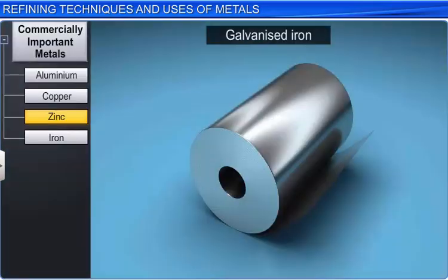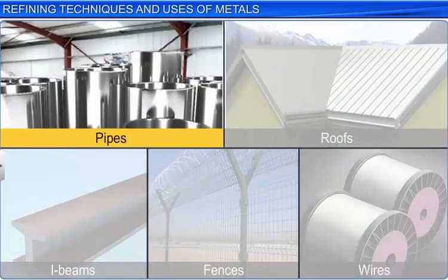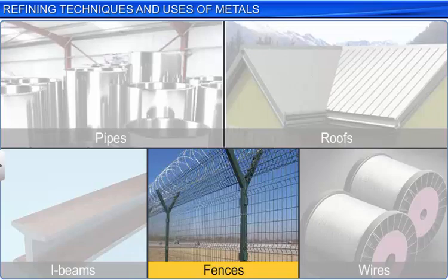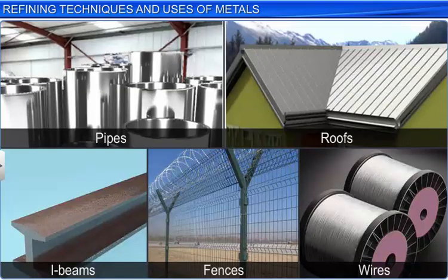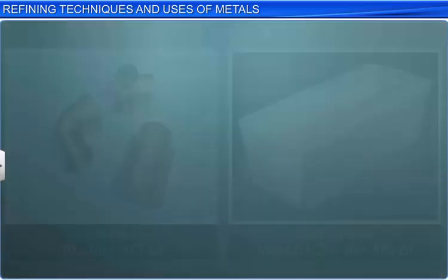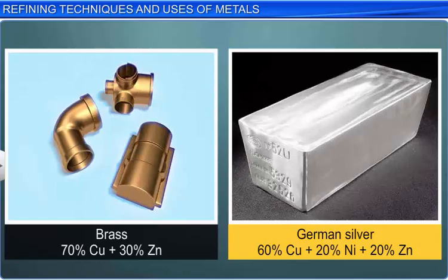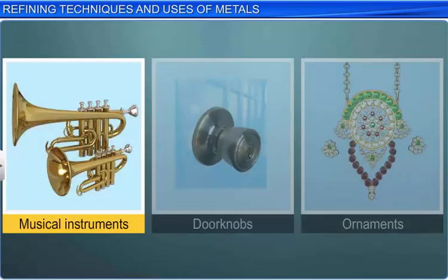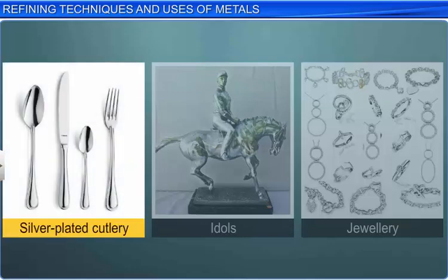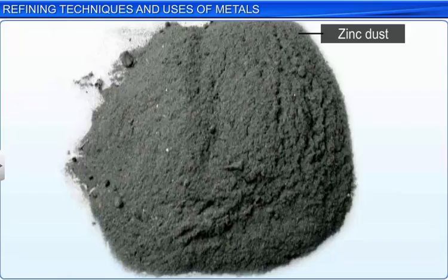Zinc is used for galvanizing iron. Galvanized iron does not corrode and is used to make pipes, roofs, I-beams, fences and wires. Zinc is extensively used in carbon-zinc dry cells or batteries. Zinc forms alloys such as brass with copper, and German silver with copper and nickel. Brass is used in musical instruments, doorknobs and ornaments, while German silver is used to make silver-plated cutlery and jewellery. Zinc dust is used as a reducing agent in the manufacture of dyestuffs and paints.